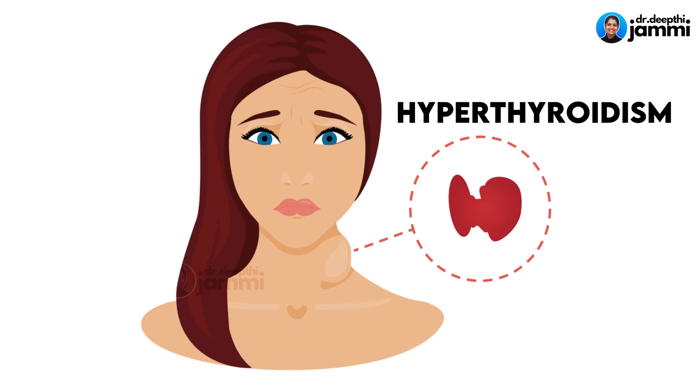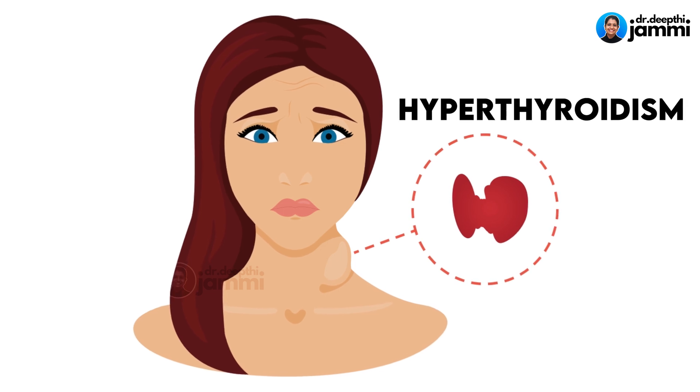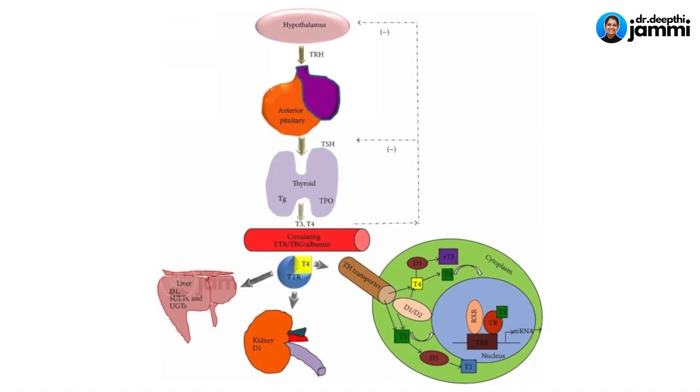The opposite condition is hyperthyroidism, where the thyroid gland is overly activated and produces excess T3 and T4. This sends a feedback signal to the brain to reduce TSH secretion. Compared to hypothyroidism, hyperthyroidism has a much lower incidence.